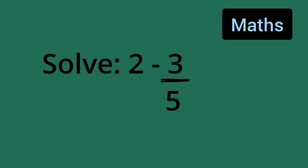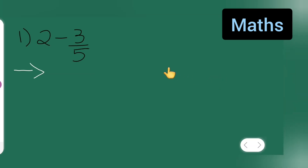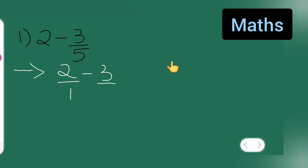In today's class of mathematics, let us subtract 2 minus 3 upon 5. Take down the question: 2 minus 3 upon 5. Here the denominator is not given for 2, so consider it as 1. Write down 2 upon 1 minus 3 upon 5. Now what you have to do is cross multiply.